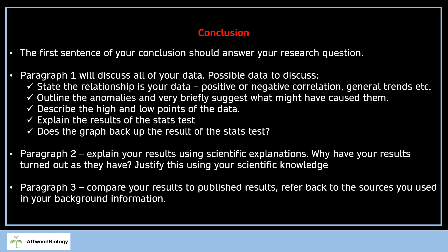You don't have to follow this exactly — you can still get six marks if you don't follow this structure for the conclusion, but I think this just hits all of the descriptors that you need to hit. So paragraph one is going to discuss all of your data. Things you might want to discuss will be the relationship within your data — is there a positive correlation, a negative correlation, or no correlation? What are the general trends? You might want to outline the anomalies, which you will have circled or highlighted in your results table and won't have included in your data processing and statistical tests.